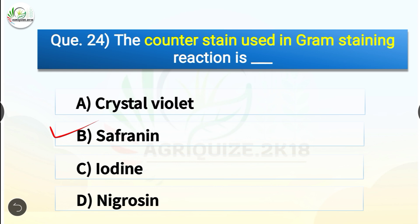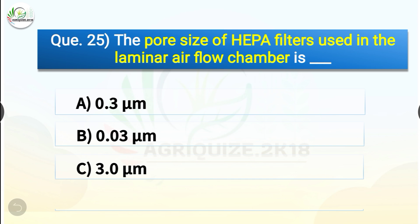Question number twenty-five: The pore size of HEPA filters used in the laminar airflow chamber is dash. The options are 0.3 micrometer, 0.03 micrometer, 3 micrometer, or 1.25 micrometer. The correct answer is option A, 0.3 micrometer. The pore size of HEPA filters used in the laminar airflow chamber is 0.3 micrometer.